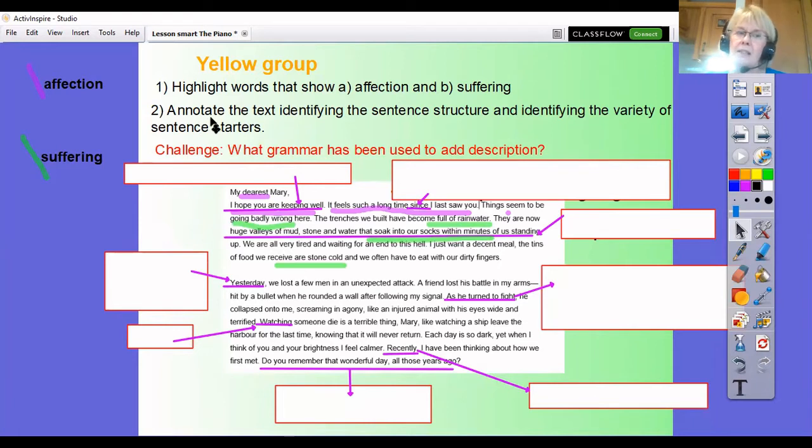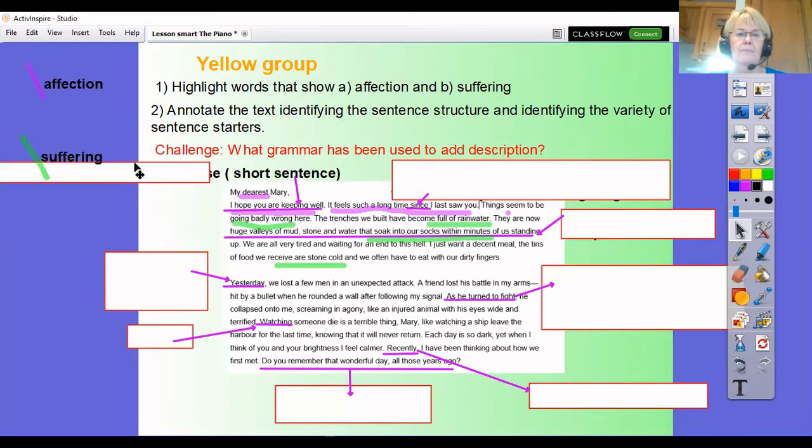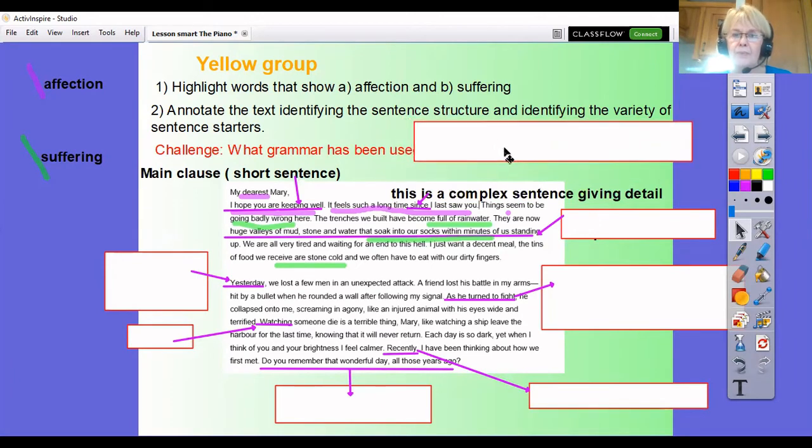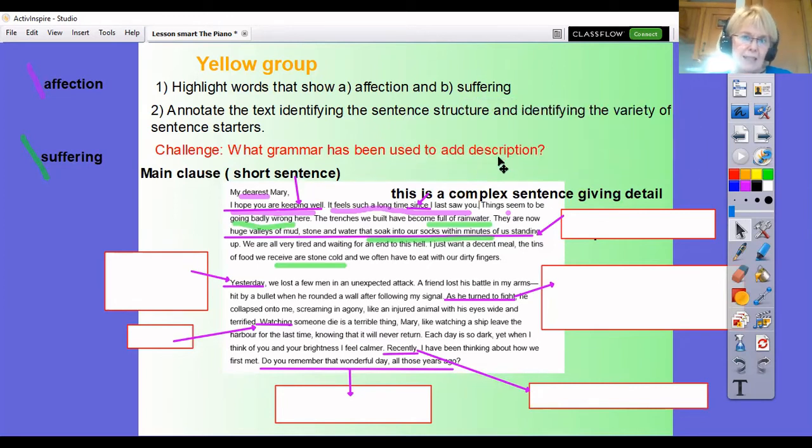So now I'm going to have to look at this. So annotate the text, identify the sentence structure and identify the variety of sentence starters. Okay that's two things there. So what type of sentence is it and what type of sentence starters have we used. Okay so here we go. This here I hope you're feeling well, it's a short sentence, it's a simple sentence, it has a verb and a noun, it's a main clause. I've identified that, that's all I wanted to do. And here it feels such a long time since I last saw you, this is a complex sentence because it's giving detail.